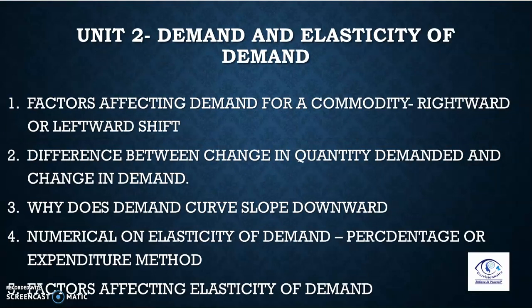The second part of unit two covers: factors affecting demand for a commodity, rightward or leftward shifts, change in quantity demanded versus change in demand — extension, contraction, increase, or decrease. Why does the demand curve slope downward? You will surely get a numerical on elasticity of demand, be it percentage method or expenditure method — expenditure method has been added again this year. Last is factors affecting elasticity of demand.